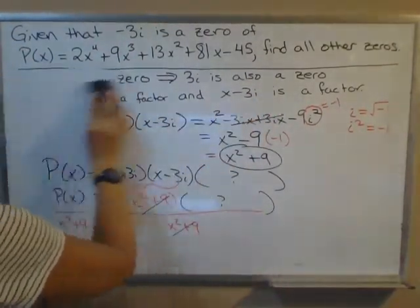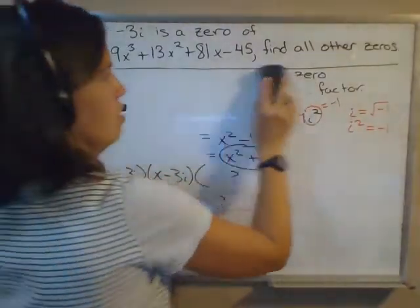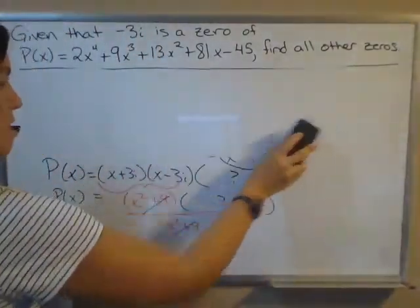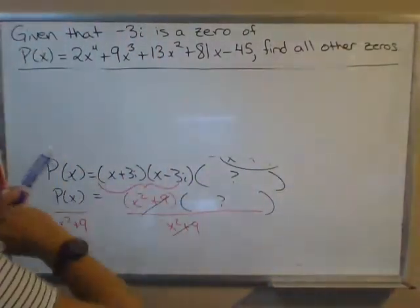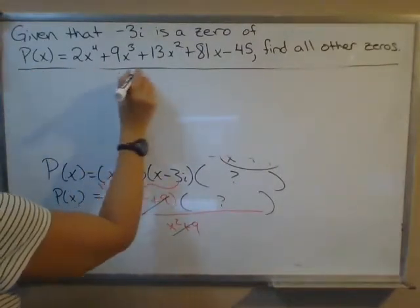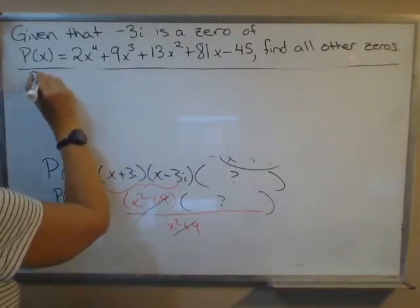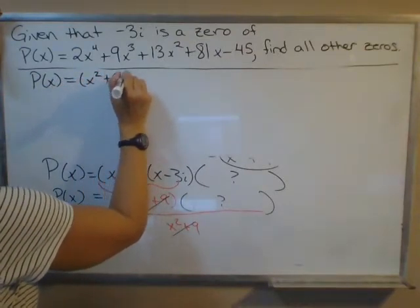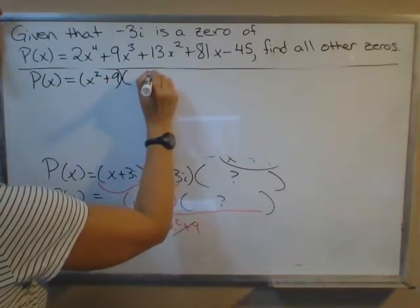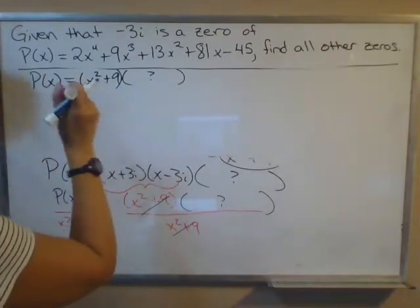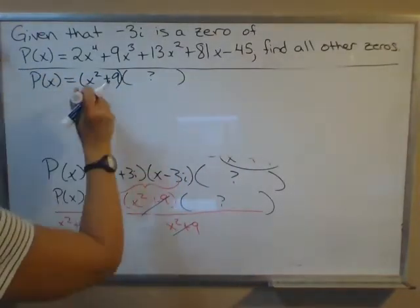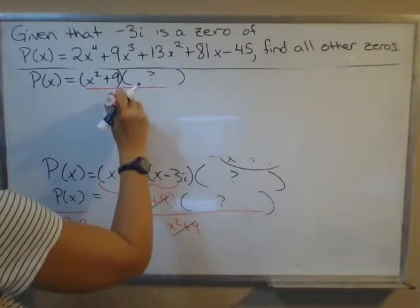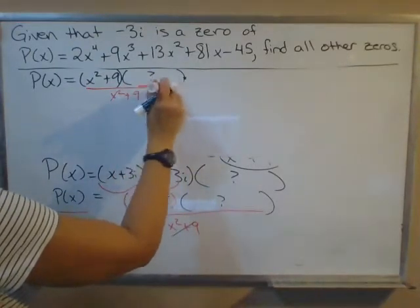I'm going to need some of this space, so I'm going to get rid of some of this, but I do want to write as a reminder: P(x) equals x^2 + 9 times something, and we're dividing by x^2 + 9 to find this missing piece right here.